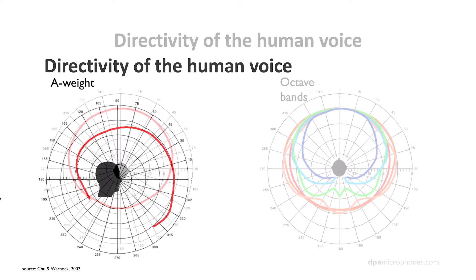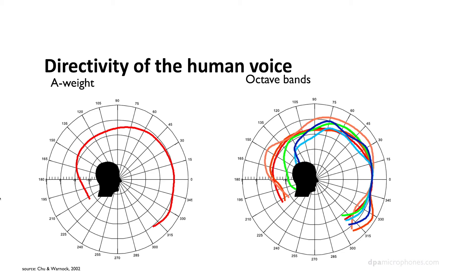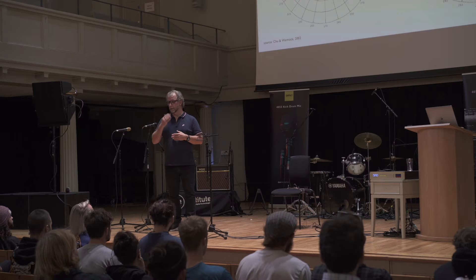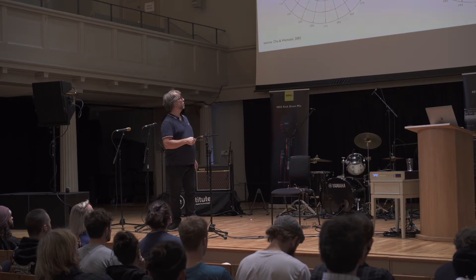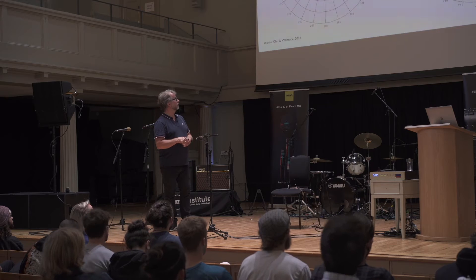If we turn it around, we see that we have more level below the voice than we have above. But that doesn't mean we have higher intelligibility below the voice. In this direction — 45 degrees below — you see that we have a lot of energy on some of the vowels. And those vowels take over from the consonants, the higher frequencies. So we have worse intelligibility below than we have above, where the blue and the green are more balanced.